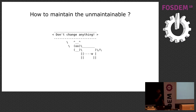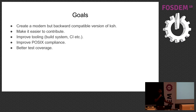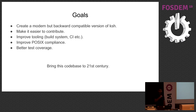So how do you bring upstream to a healthy state? Let's choose some goals and start working towards them. Our top priority is to create a modern but backward-compatible version of Korn Shell. We want to make it easier to contribute, improve tooling, achieve better POSIX compliance — Korn Shell is largely POSIX-compliant but there are still some gaps. We want to fill those gaps and get better test coverage. In short, we want to bring this codebase to the 21st century.